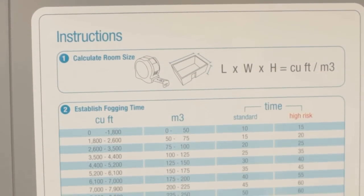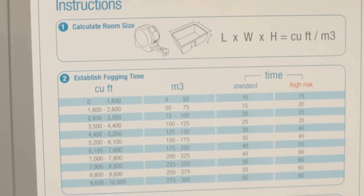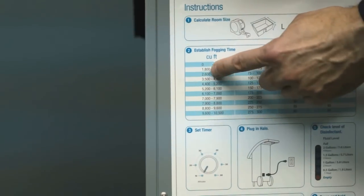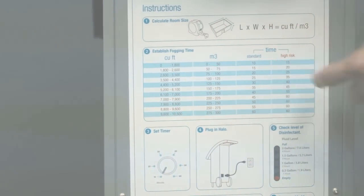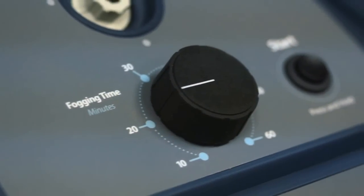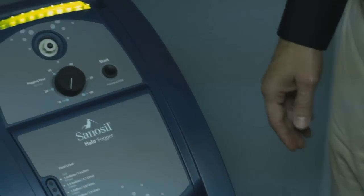On the back of the Halo unit and in the Halo's user manual is a fogging time chart. Determine the fogging time by finding your room size and its corresponding fogging time. Turn the fogging time knob on the front of the Halo to the desired runtime.